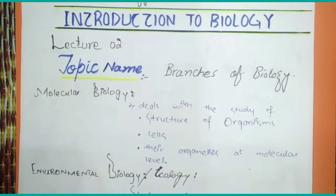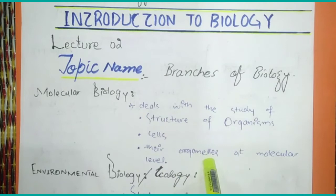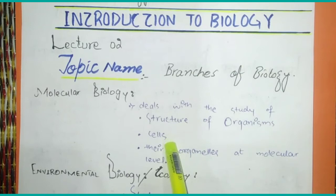The first branch of biology is molecular biology. Molecular biology is the branch of biology which deals with the study of structure of organisms, cells and their organelles at molecular level. In molecular biology we talk about organism structures, cells and organelles down to the molecular level.